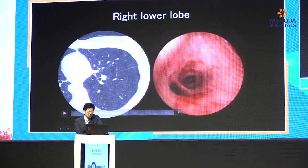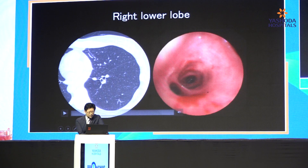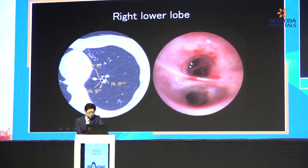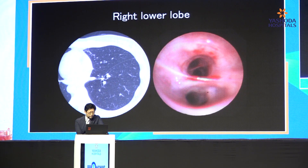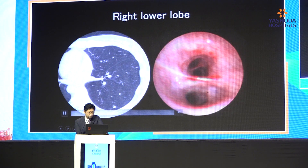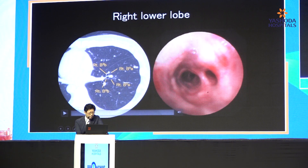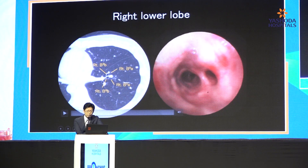You can see the orifice of the right lower lobe. It's divided into B7, B8 plus 9, and B10. You can see the branches B8, B9, and B10A. And again, the branch from the right side is B8A and the left side is B8B, similar to B9A and B9B.